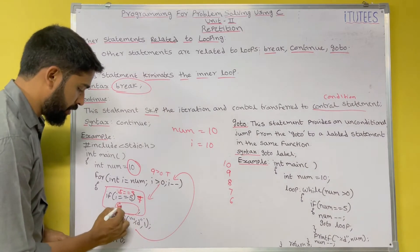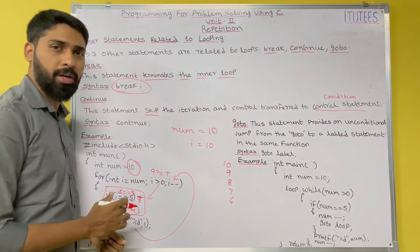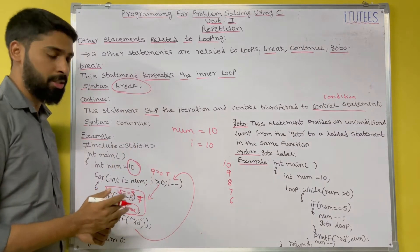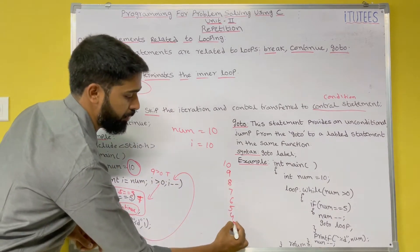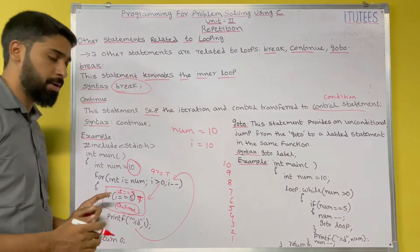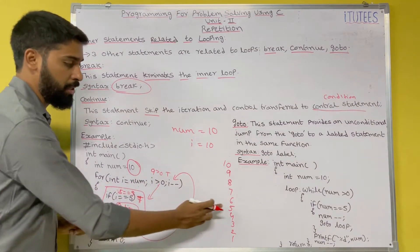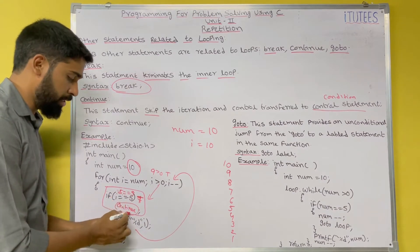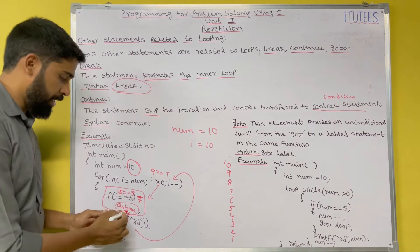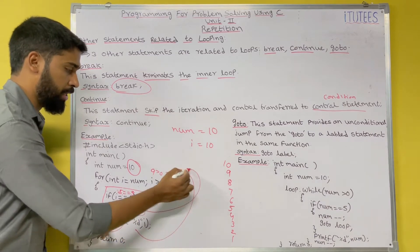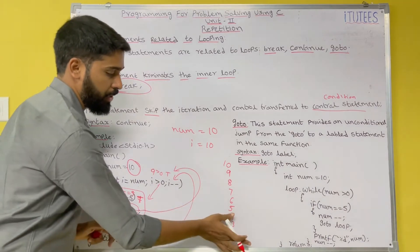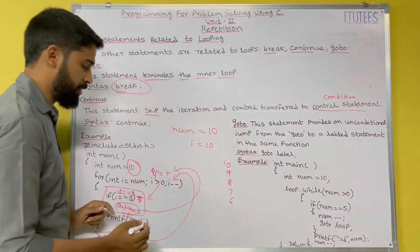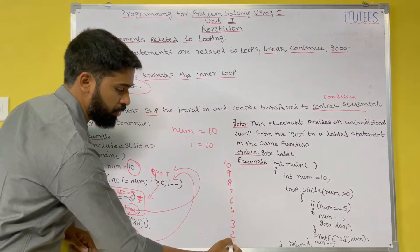Instead of break, if you use continue in the same place, what is the purpose of continue? The continue statement is used to skip the iteration and the control goes to the condition. The output would be 10, 9, 8, 7, 6. When i becomes 5, the condition is true and continue executes. Continue means skip the iteration — the below instruction (print) does not execute. The control goes to i minus minus, then checks 4 greater than 0, and continues printing 4, 3, 2, 1. So 5 is skipped.